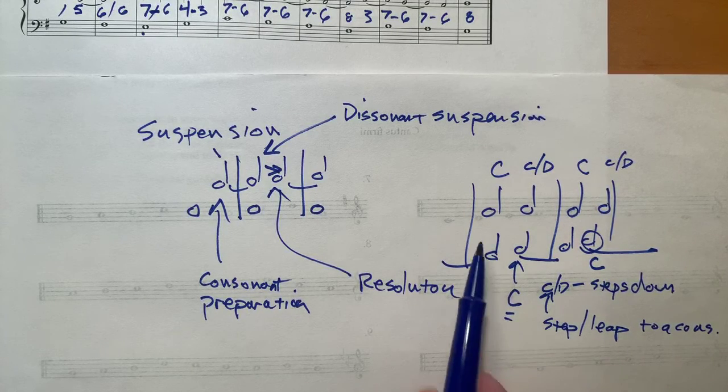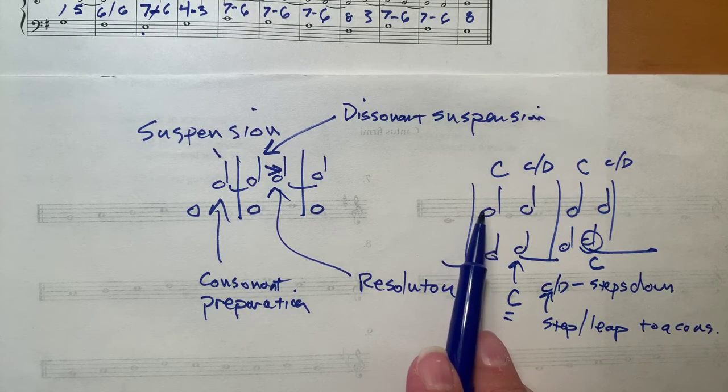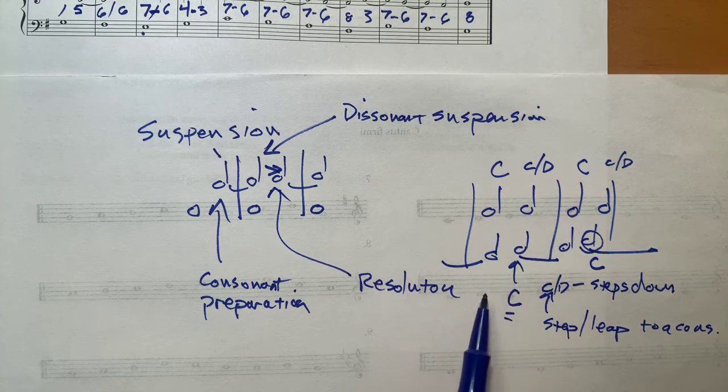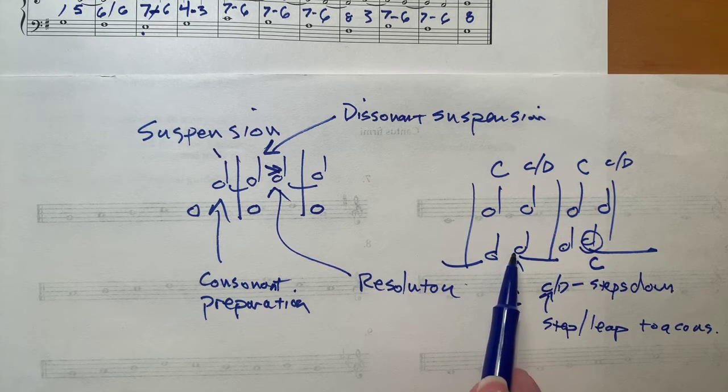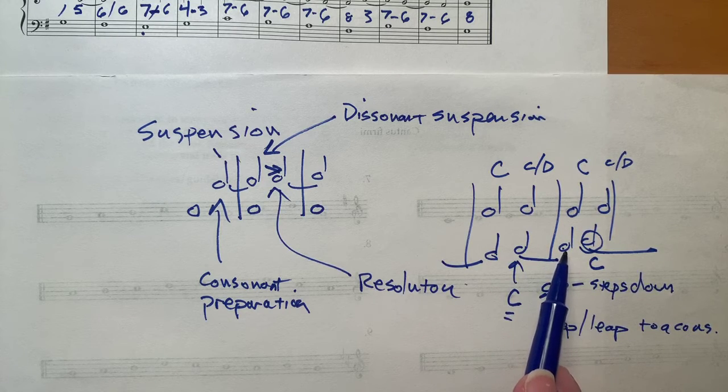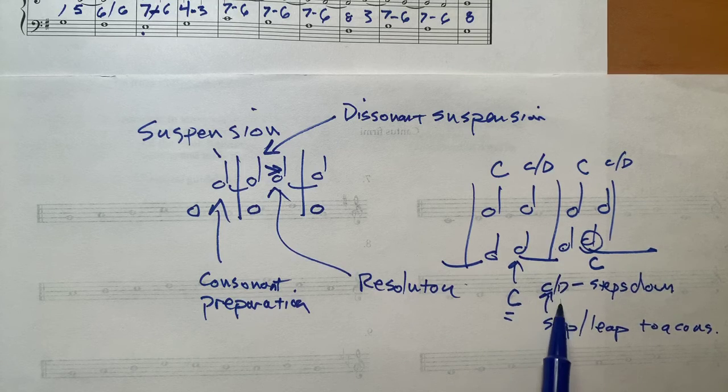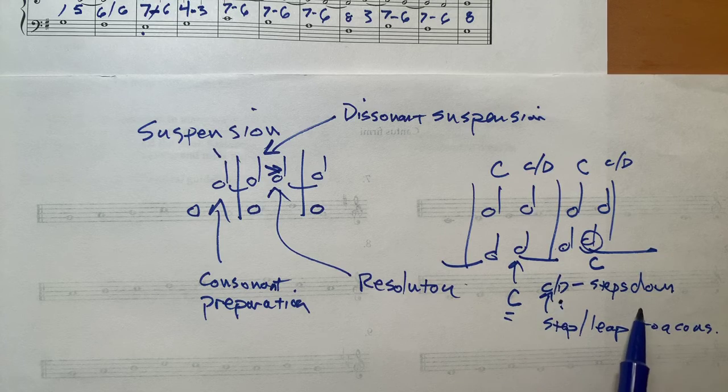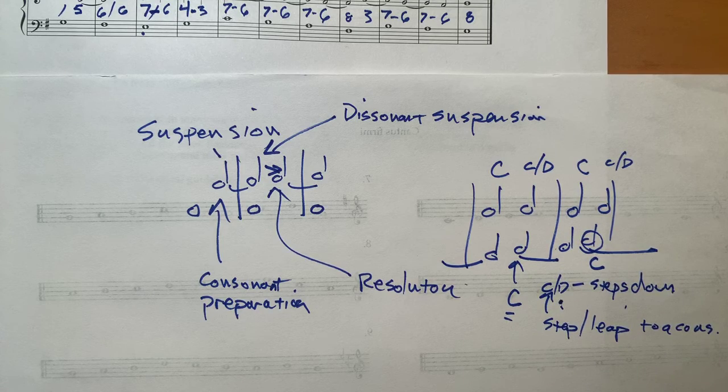Okay, so in second species, the downbeat is consonant. The weak beat can be consonant or dissonant. In fourth species, the weak beat is always consonant, and the downbeat can be consonant or dissonant. If it is dissonant, it's a dissonant suspension, which means it needs to step down to a consonant pitch.